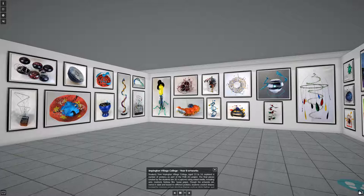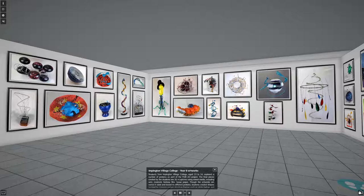Students from Impington College, aged 13 to 14, explored a number of proteins as part of the PDB Art Project. The final pieces created by the students are 3D sculptures using mixed media, including wire, mod rock, fancy film and tissue paper. Though the artworks are varied in style and based on different proteins, students created shapes inspired by common protein structure themes, such as alpha helices and viral capsids.